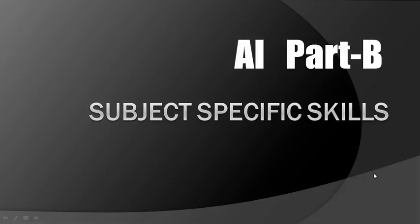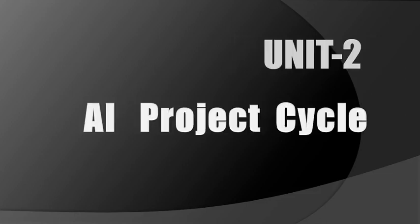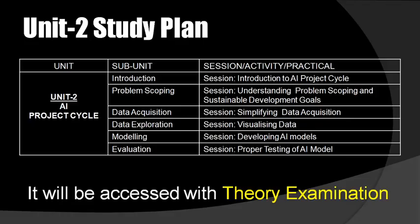Hello everyone. Today I am starting a new unit of AI Part B. Part B means the subject specific skills part, for which I have provided you the AI manual student handbook. In this part, I am going to start the AI project cycle, which is Unit 2. Unit 2 AI project cycle is divided into 6 subunits.